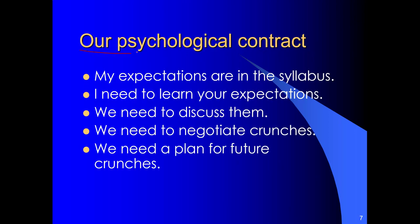So we're going to negotiate a psychological contract for our class. My expectations are in the syllabus, so read the syllabus to understand my expectations. But I need to learn your expectations. Then we need to discuss all the above. And then we need to negotiate what the potential crunches are. And then finally, we need to plan for future crunches or future pinches. We have to have a mechanism in place to formally allow people to trigger a rediscussion and renegotiation of the class norms.